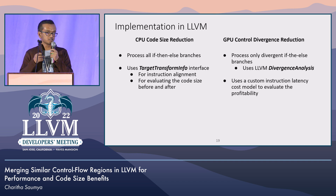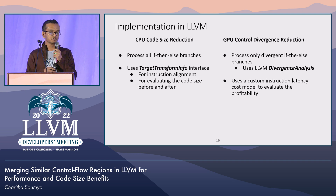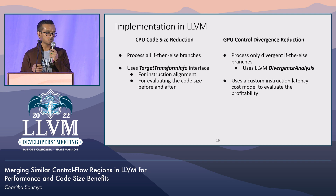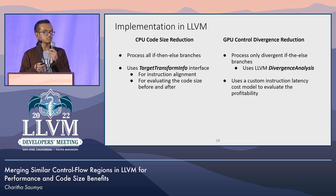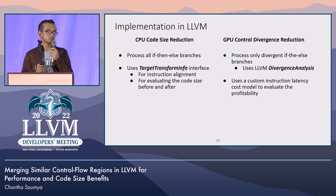We implemented this transformation as an LLVM IR transformation pass to test it on different applications. We have two variants: one for CPU code size reduction and one for GPU control flow divergence reduction. In the CPU implementation, we process all eligible if-then-else branches and use the TargetTransformInfo code size interface for instruction costs and evaluating code size before and after transformation — applying it only when it reduces code size. In the GPU version, we only process divergent if-then-else branches using LLVM divergence analysis, and use a custom instruction latency cost model to evaluate profitability.